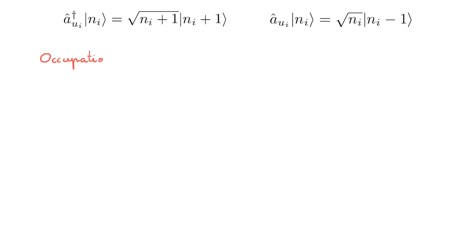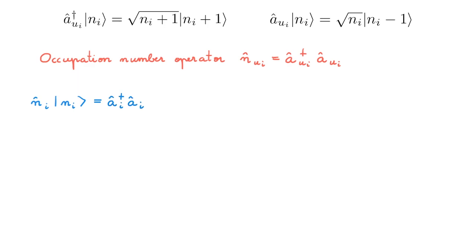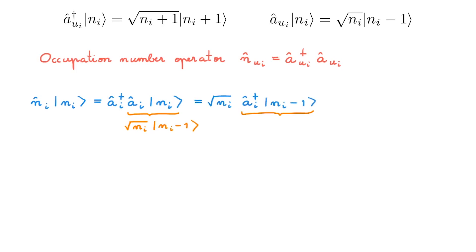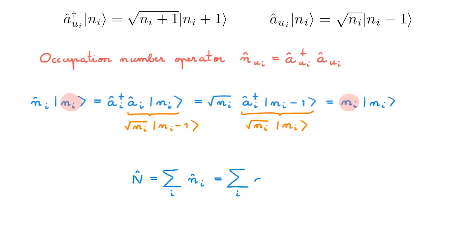The final thing I want to discuss before wrapping up is the occupation number operator. We define it as NUI equals aUI-dagger aUI. To see why it is called the occupation number operator, consider its action on a Fock state |ni⟩: spelling out the operator, we first annihilate a particle and then create a particle, obtaining ni times |ni⟩. This shows that Fock states are eigenstates of the occupation number operator, with eigenvalues ni telling us how many particles are in that state. We can construct the total number operator by summing over all single particle occupation number operators.